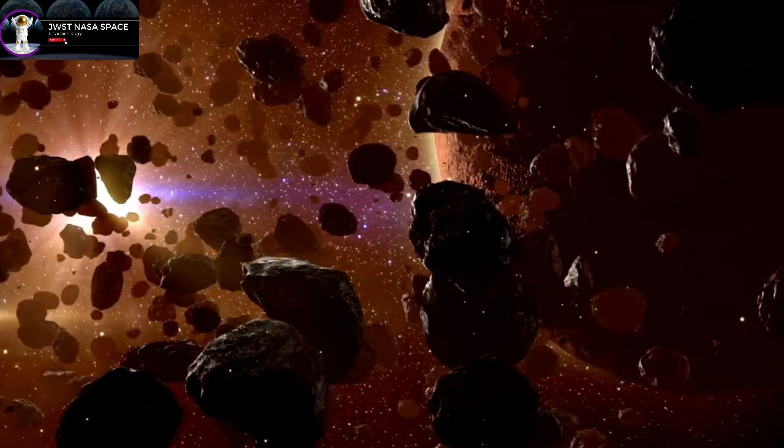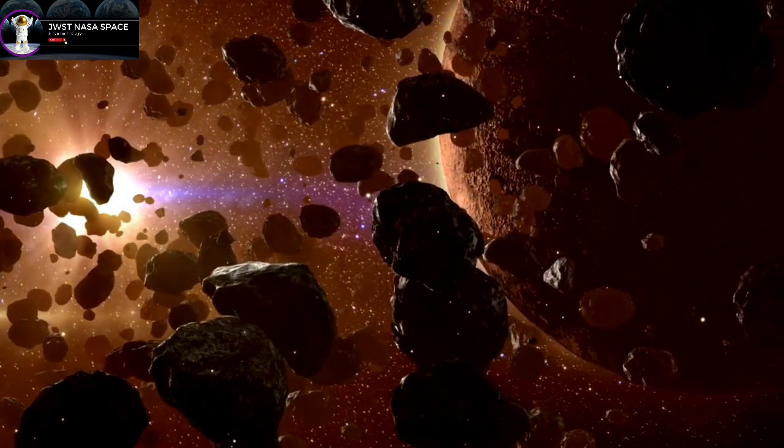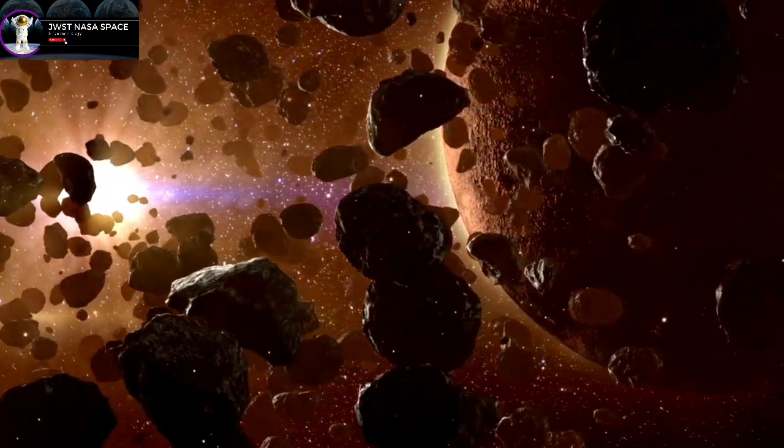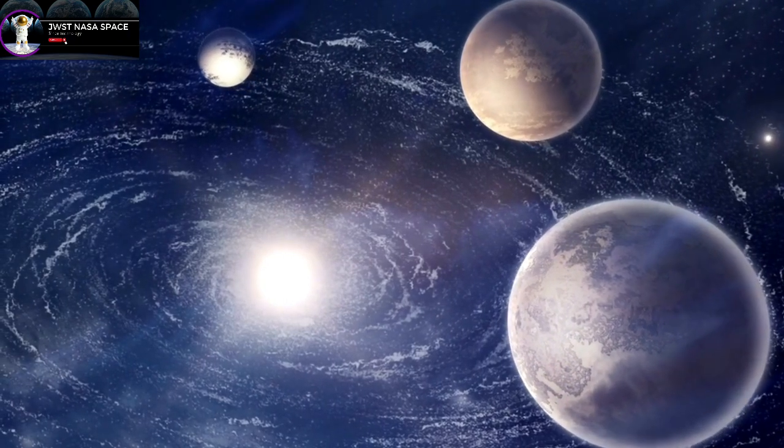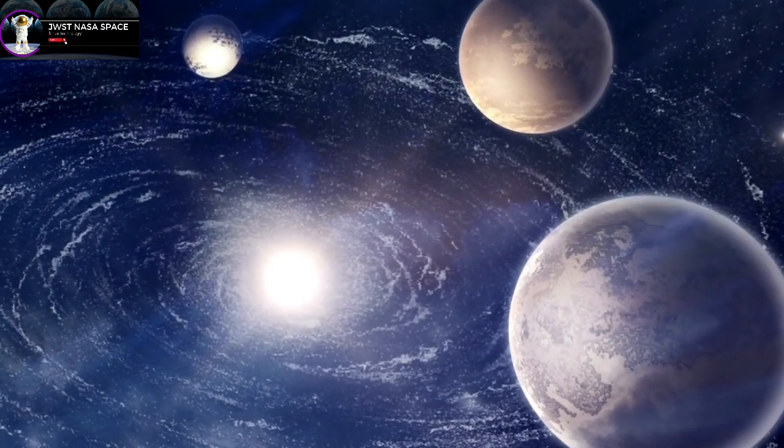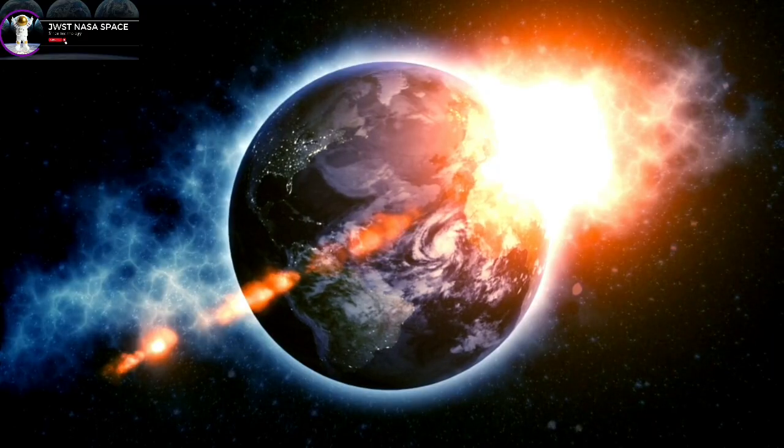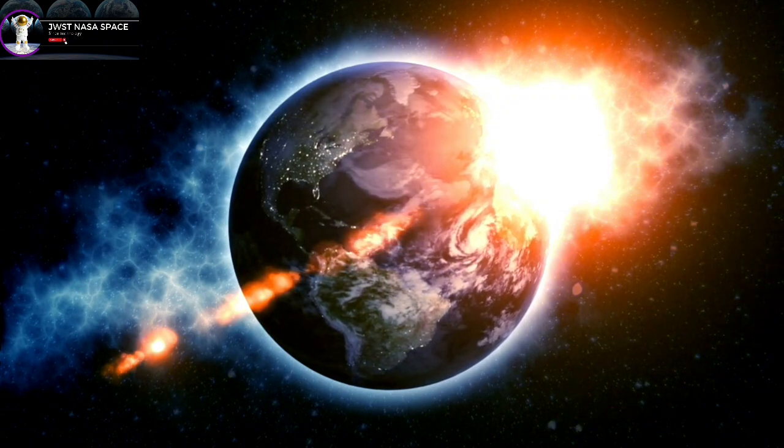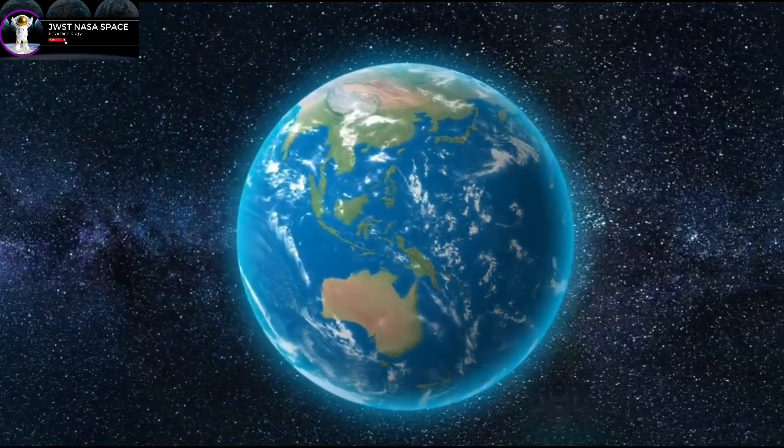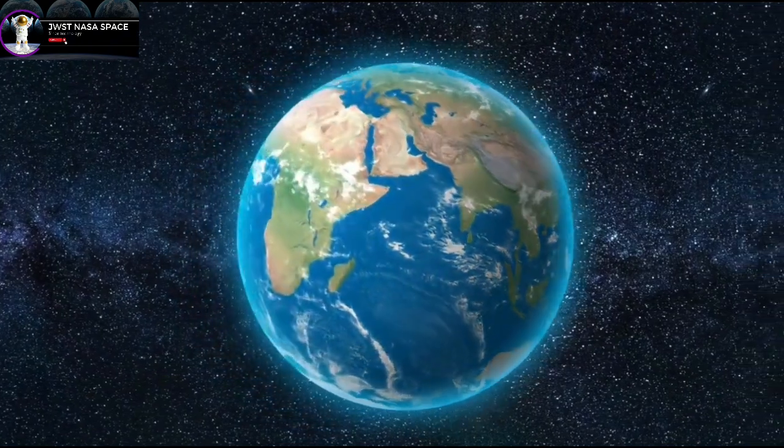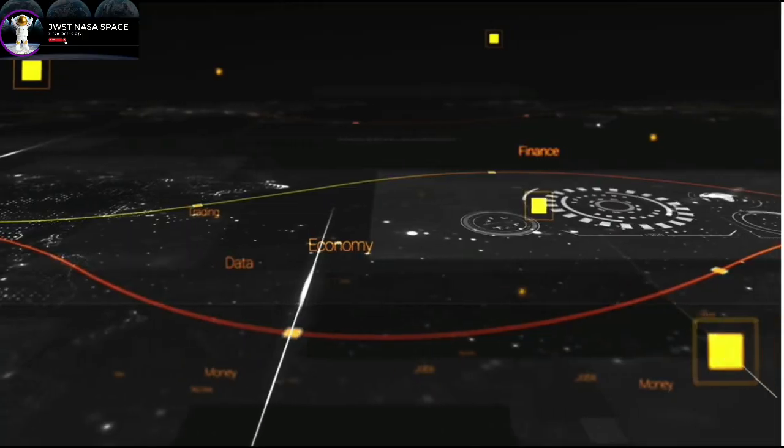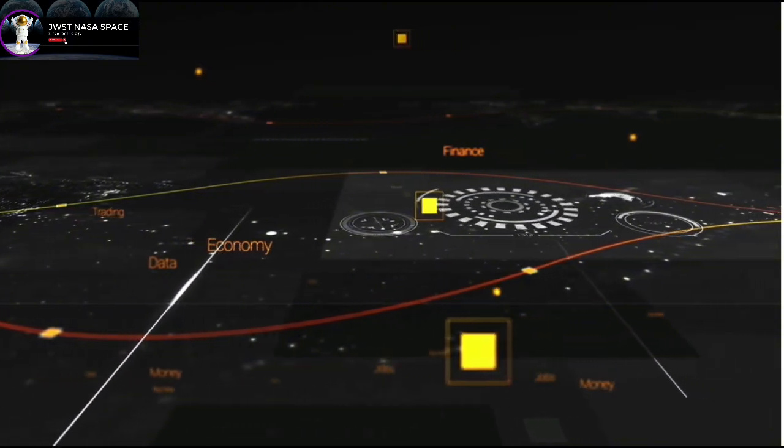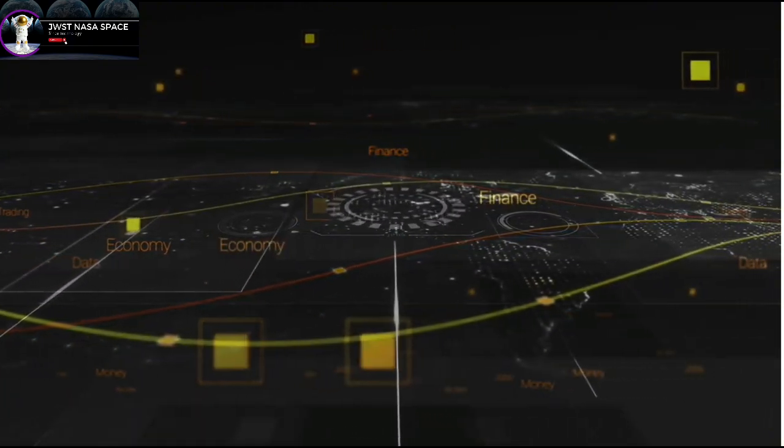However, the habitability of a red dwarf like Proxima Centauri is still debated. For one, it is a flare star, meaning it undergoes regular, sometimes extreme flares. As a low mass star, its habitable zone would be much closer than the sun's, likely somewhere between 0.023 and 0.050 AU.